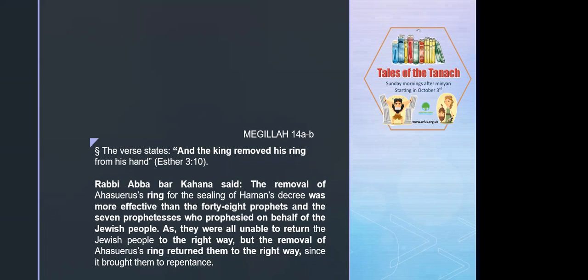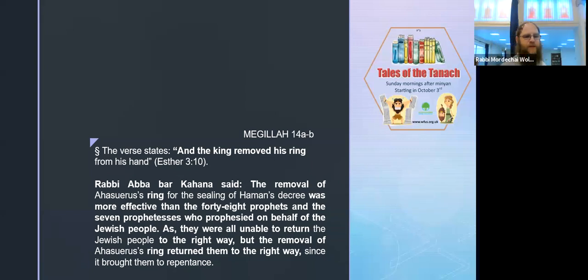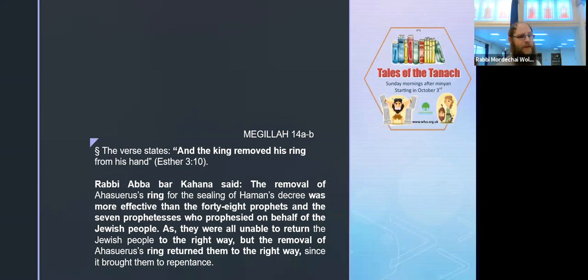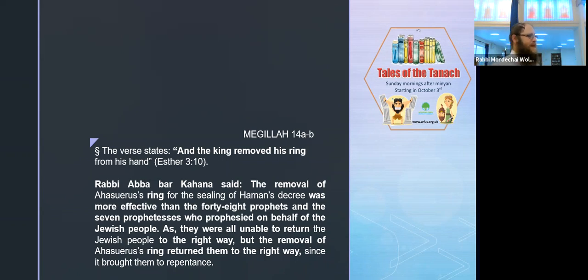This is the Gemara in Megillah. It says: when the king took his ring off his hand and gave it to Haman to seal the fate of the Jewish people, Rabbi Abba says this act - which was a terrible existential threat to the Jews - was more effective than the 48 prophets and the seven prophetesses who gave prophecy on behalf of the Jewish people. They failed to get the Jewish people to do teshuva. But Achashverosh's ring being removed - sealing the decree against the Jews - was more effective for teshuva in the time of Mordechai than all the prophets. There's no atheist in a foxhole - when you feel threatened, you immediately pray to God or you do teshuva.